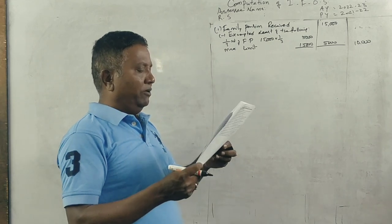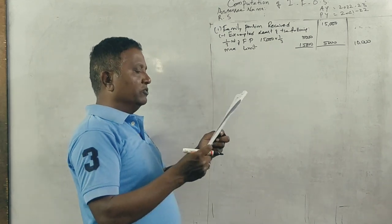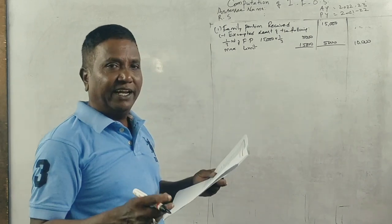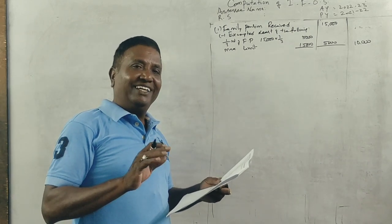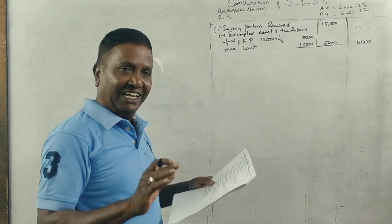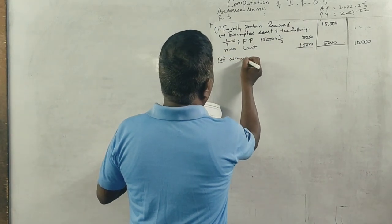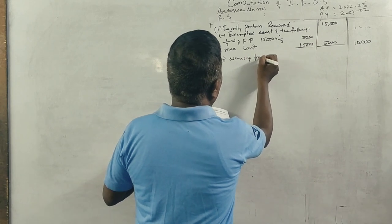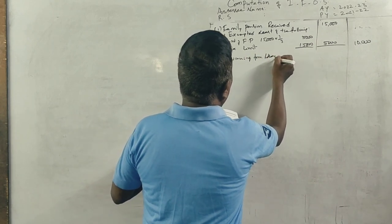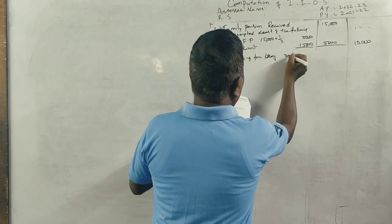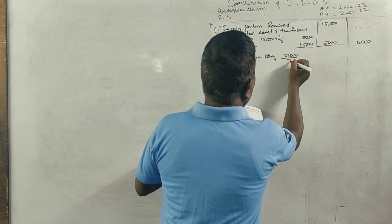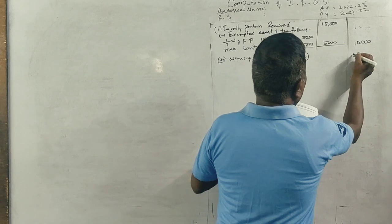Next is winning from lottery net 35,000, including purchase of lottery ticket 100. Lottery ticket will go on that direction. Minus, it will go on. That means net. So winning from lottery 35,000 divided by 70 into 100, 50,000.